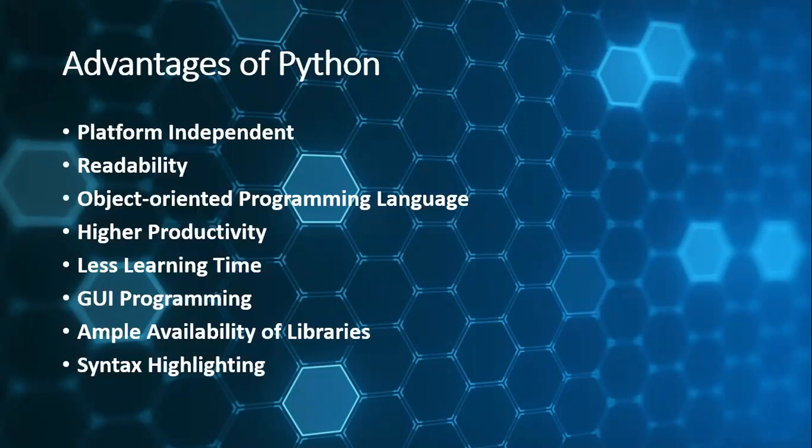So people with no substantial programming background can also understand a program written in Python. With other languages like C++ and Java, you have to know the language so that you can understand the program written in that language. But with Python, the advantage is that most, almost all keywords are borrowed from English, and hence they make reading very easy. You can read a program. Of course, it will not be grammatically correct, but if you put logic into the program that you're reading, you will understand Python more easily than you will understand any other programming language.